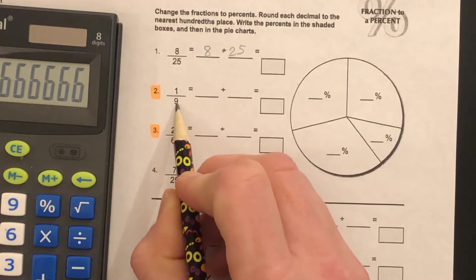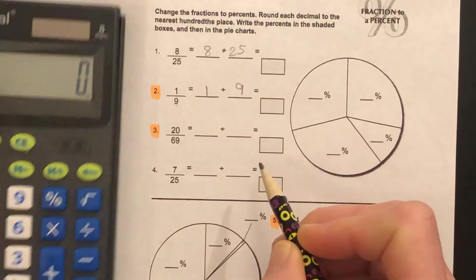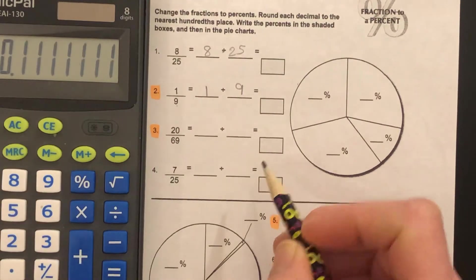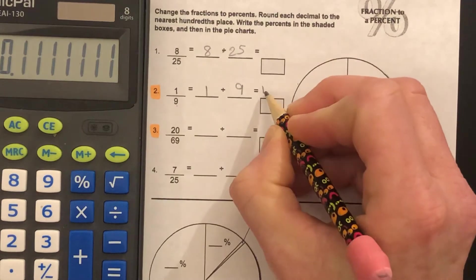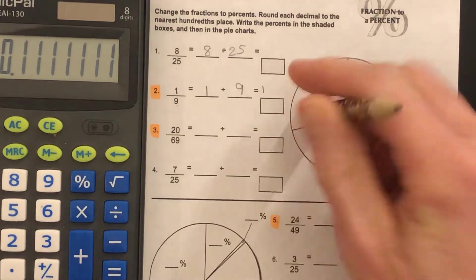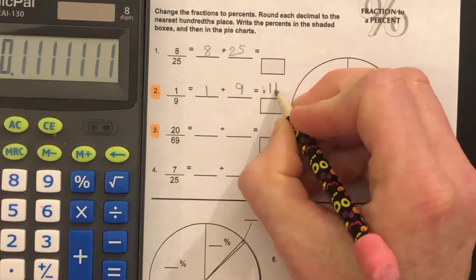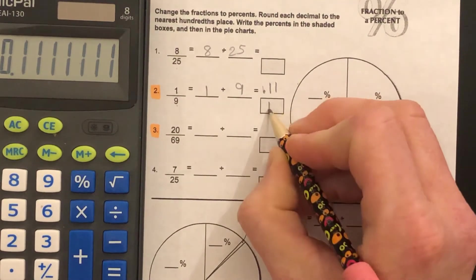It's 0.11111, so that's 0.11. That's eleven hundredths in decimal form, eleven percent.